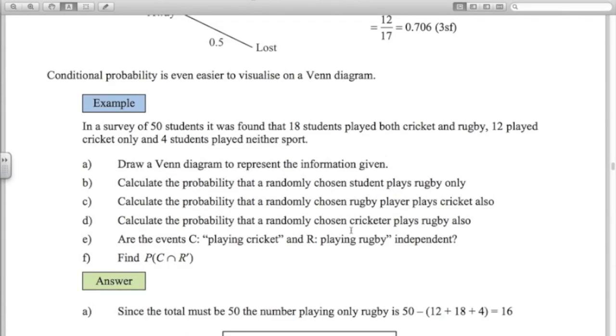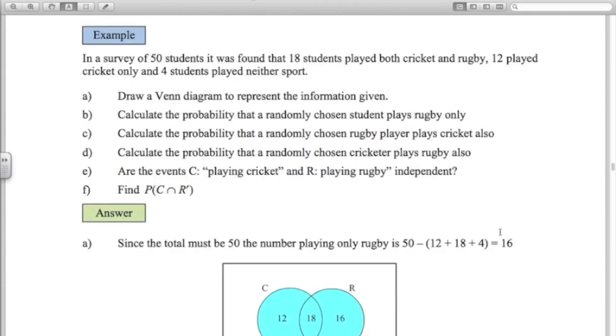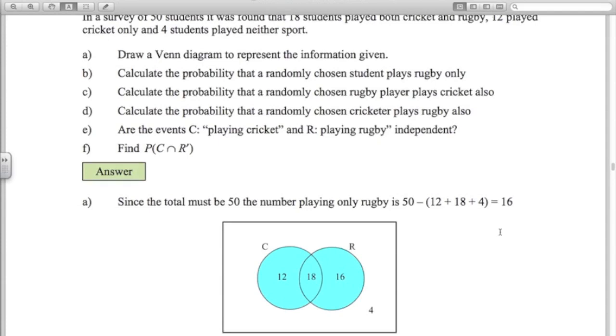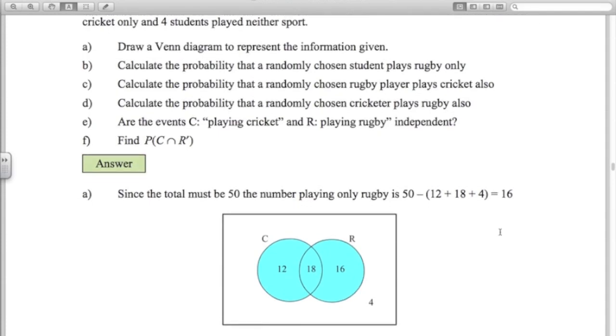Let's have a look at a conditional probability question now using a Venn diagram. We've got 50 students. 18 students played both cricket and rugby. 12 played cricket only. 4 students played neither sport. So the Venn diagram would look like this. 18 students playing both.